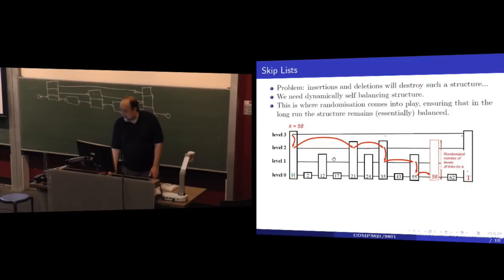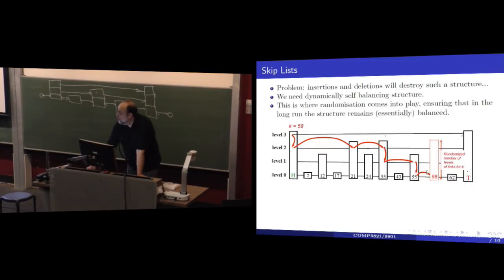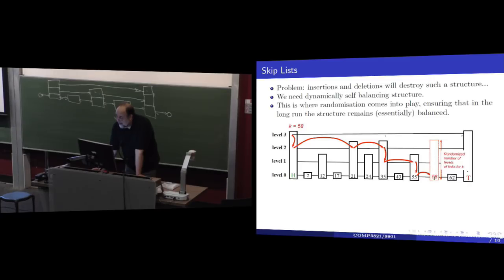When you insert, you toss a coin until you get a head and count the number of tails. As many tails as you get, those are the levels that you fill. If you got, say, two tails, you fill levels from zero to two. Deletion is also extremely simple — all you have to do is fix the pointers, exactly the same way as with regular linked lists.